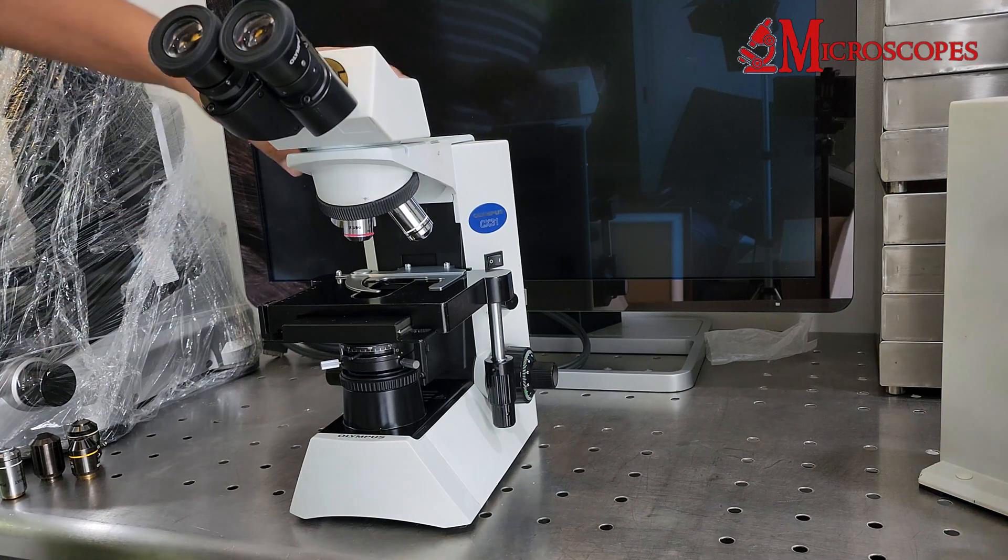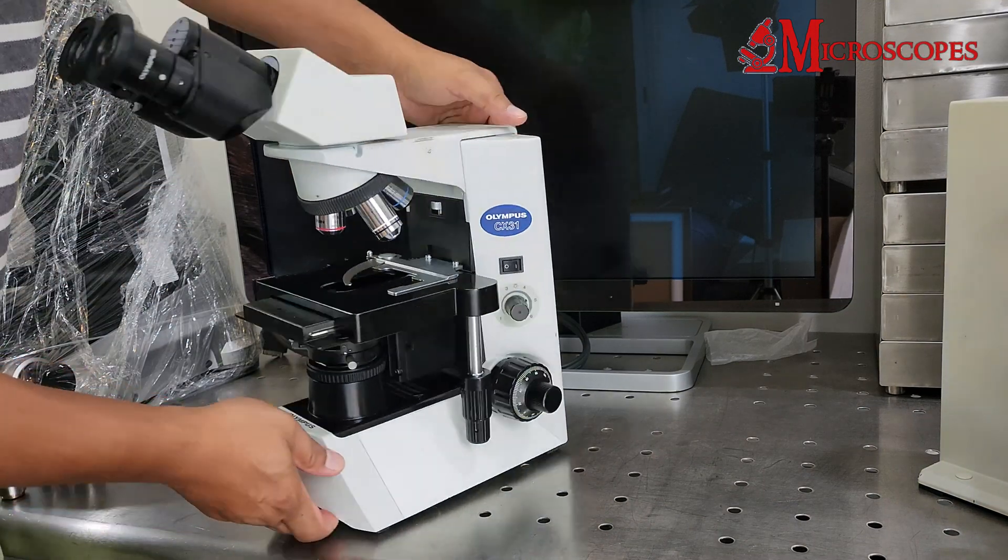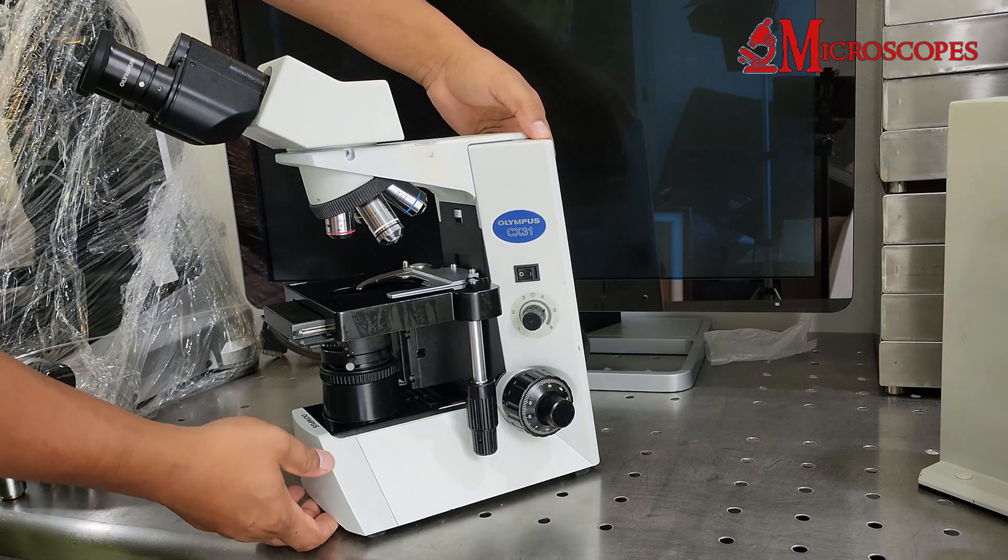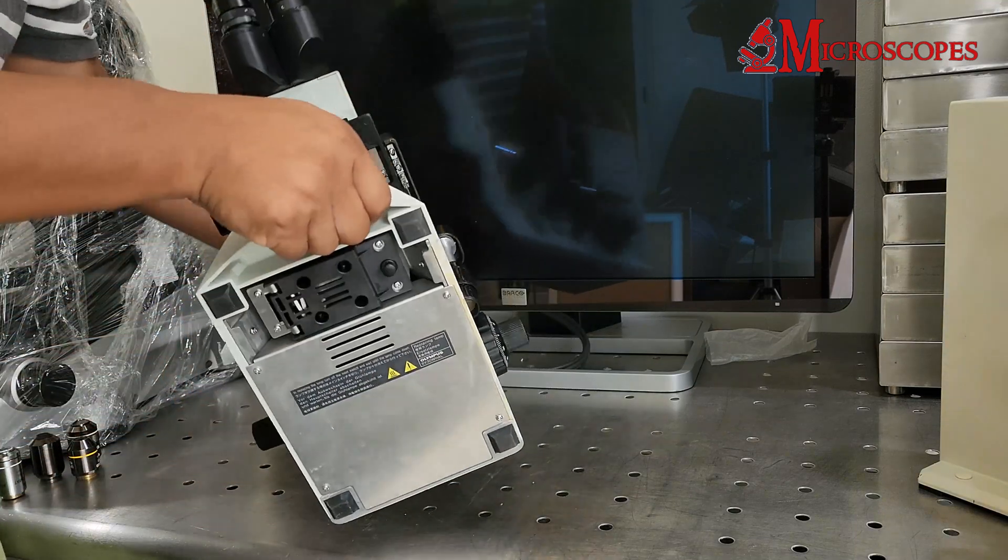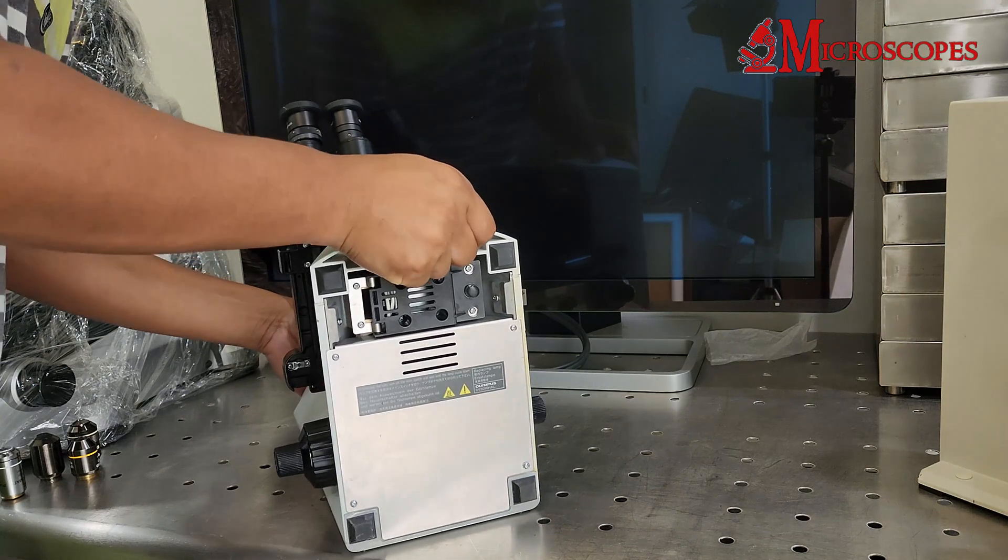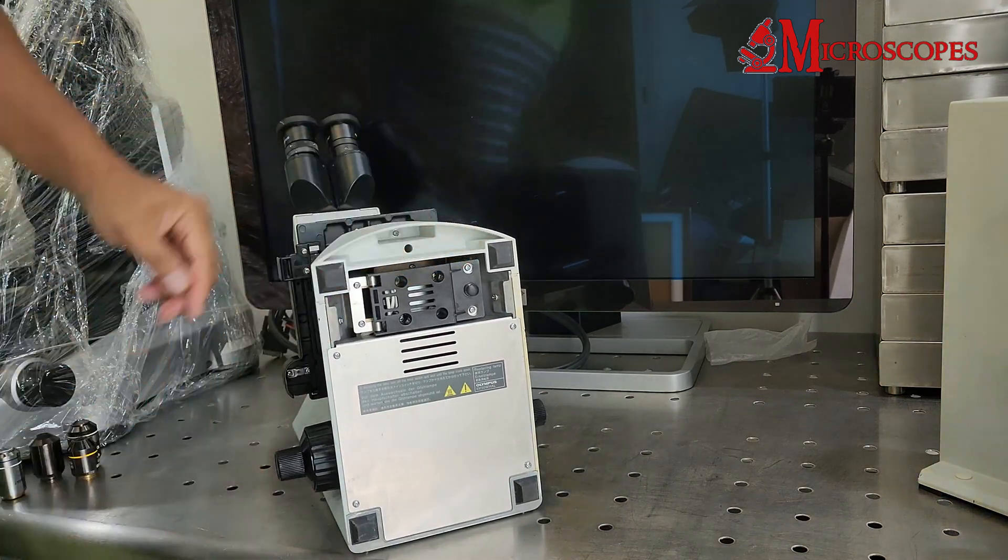How to change a halogen light bulb in an Olympus CX-31 microscope. The halogen light bulb is hidden under the base of the microscope. Lift the microscope up and follow the video.